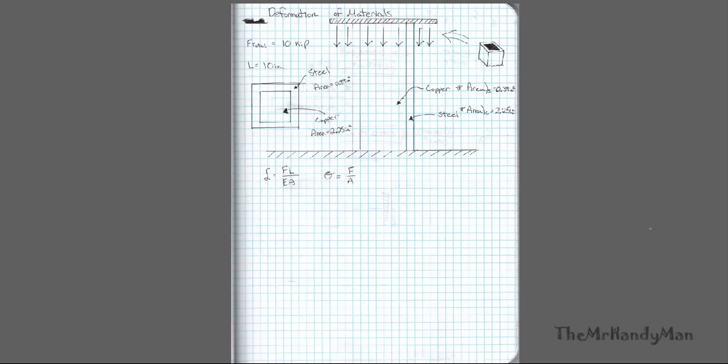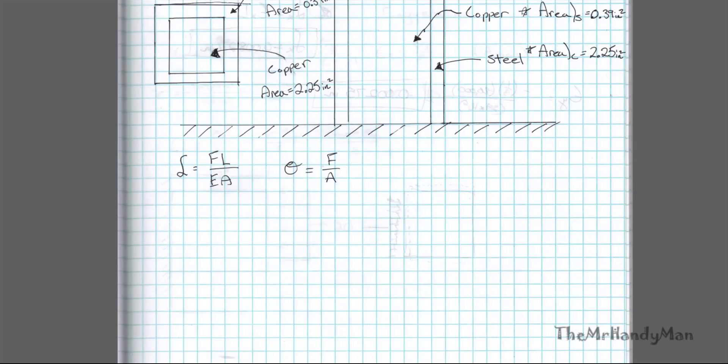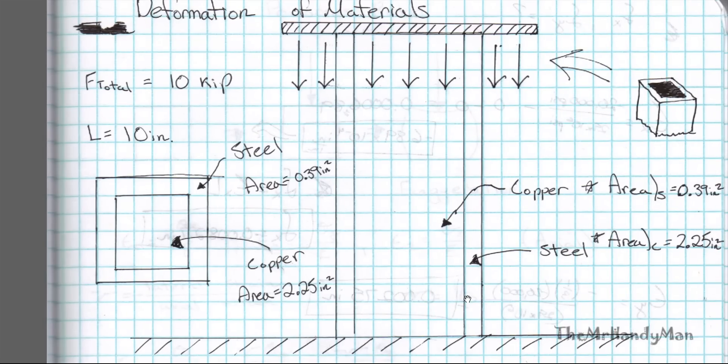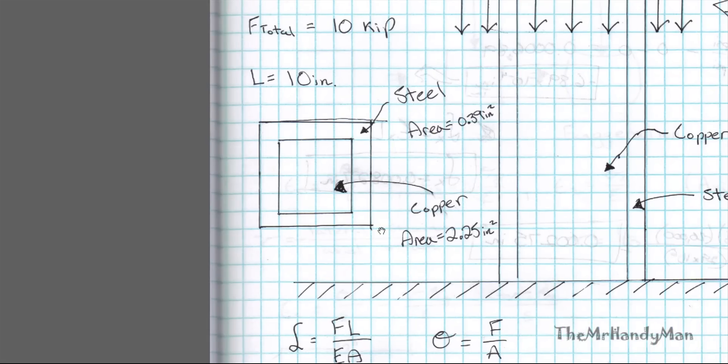In this video I'll be discussing the deformation of materials. Our example that we have here is something I just made up. We have a 10 inch long square extrusion. To the left here I have all the different cross sectional areas. And I've also listed the material type steel on the exterior. And then we filled up the extrusion pipe with copper.